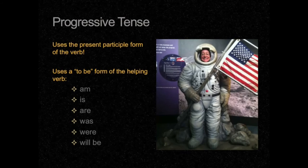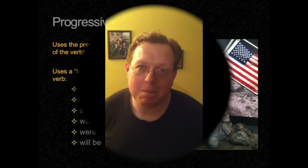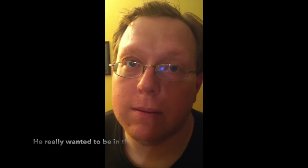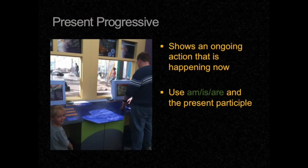Along with that present participle form of the verb, you will use a "to be" form of the verb as a helping verb. Remember, these are your tricky verbs: am, is, are, was, and were. And for future progressive, you will use "will be." What kind of music do planets listen to? Neptunes!